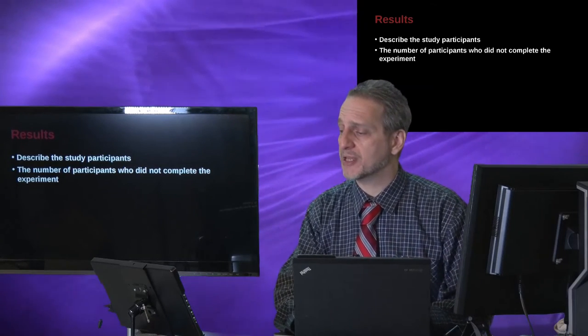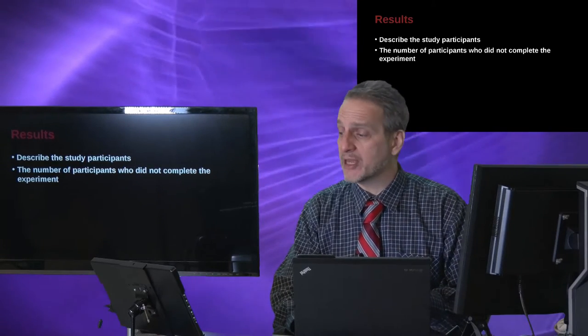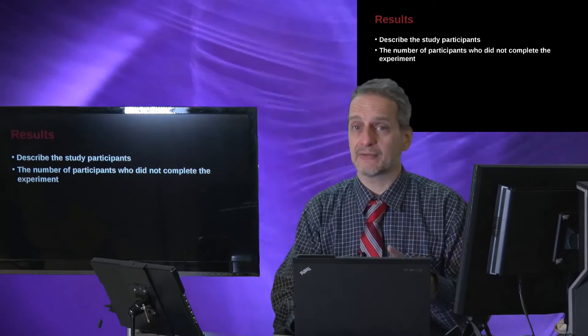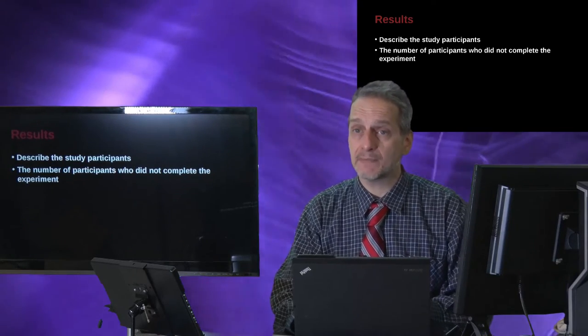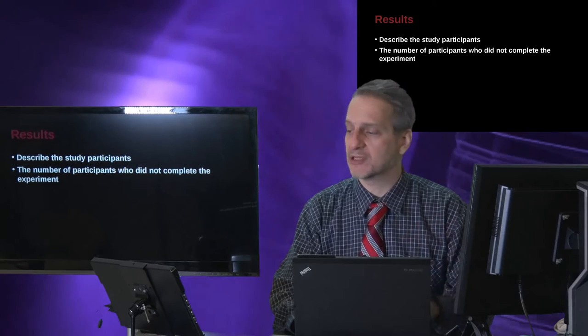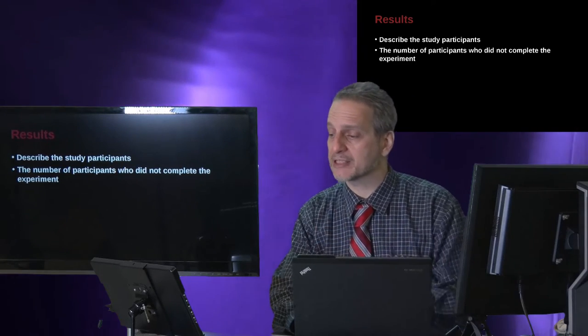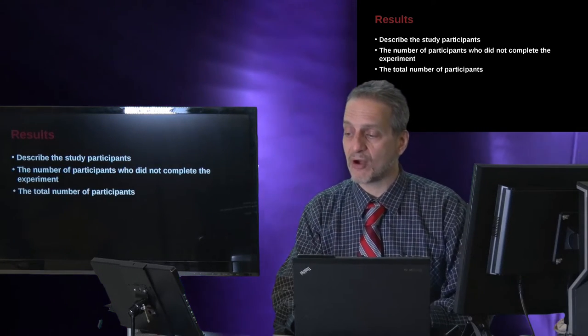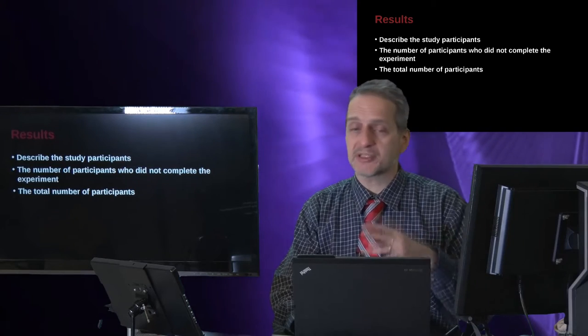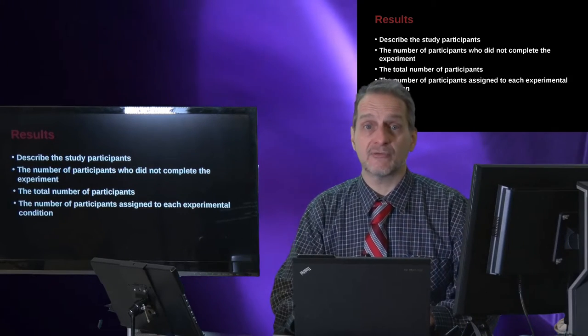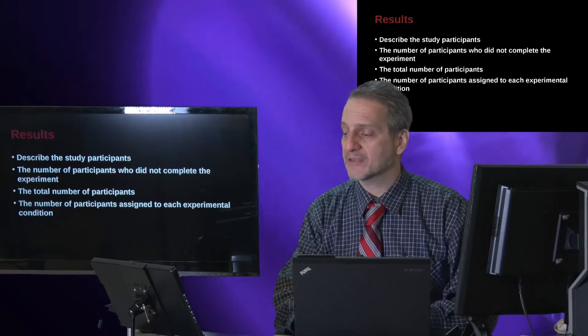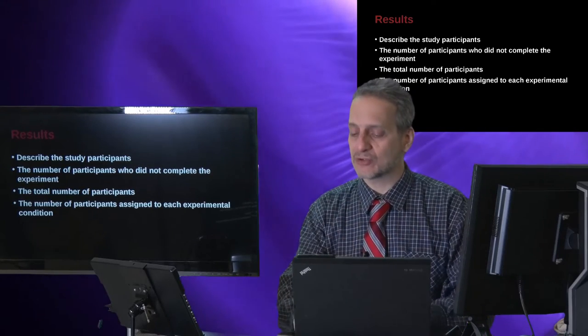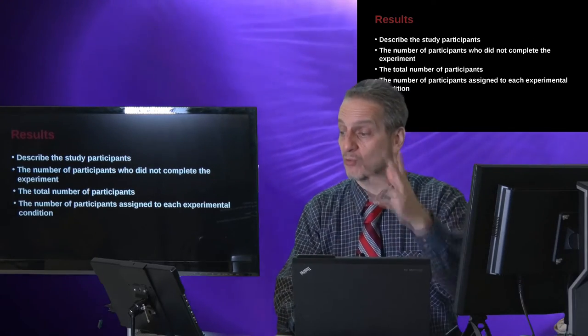The number who participated, and you may include those who did not finish the experiment. So the incomplete numbers, which in social science can be quite large, but in applied science areas actually is often quite small. The total number of participants, so we really need to get an idea of the sample frame, that is where did you do this, how did you do it, and who did you do it with or to.